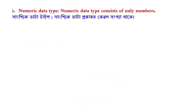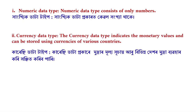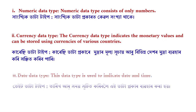Next, Numeric data type: The numeric data type consists of only numbers. Next, Currency data type: The currency data type indicates monetary values and can be stored using currencies of various countries. Next, Date/Time data type: This data type is used to indicate date and time.